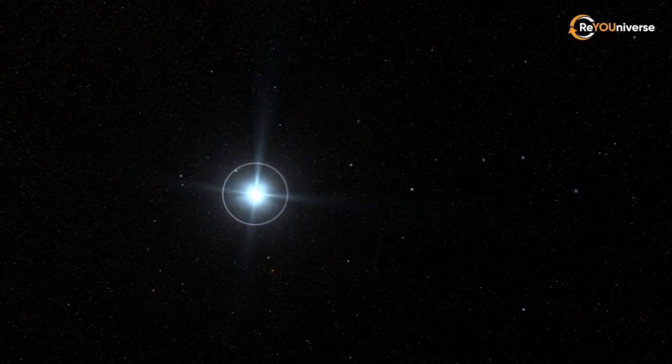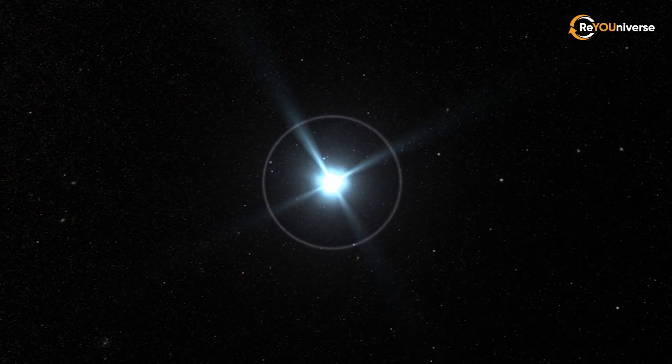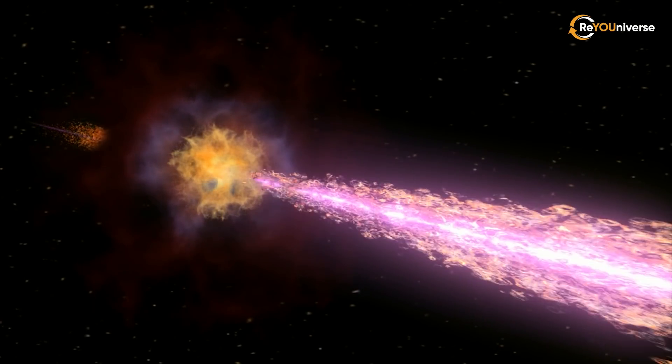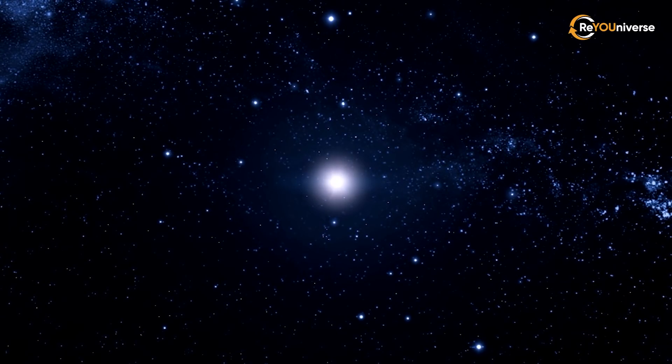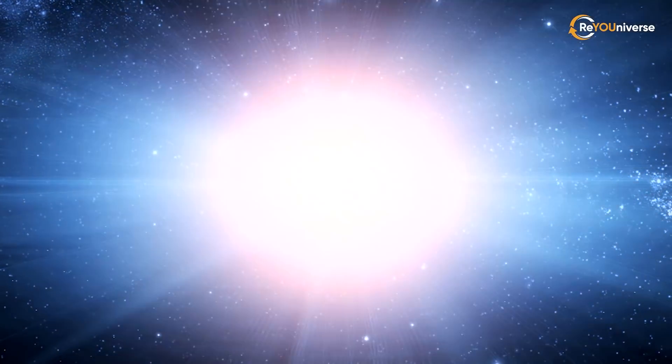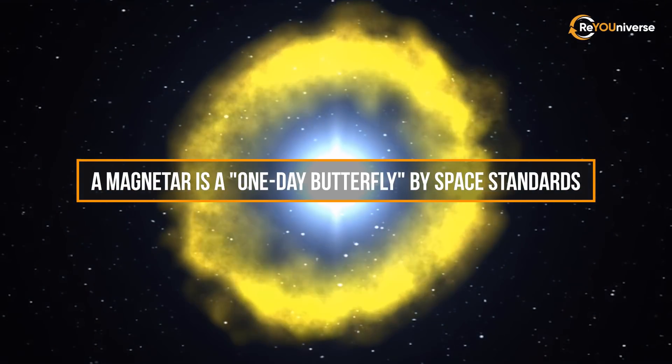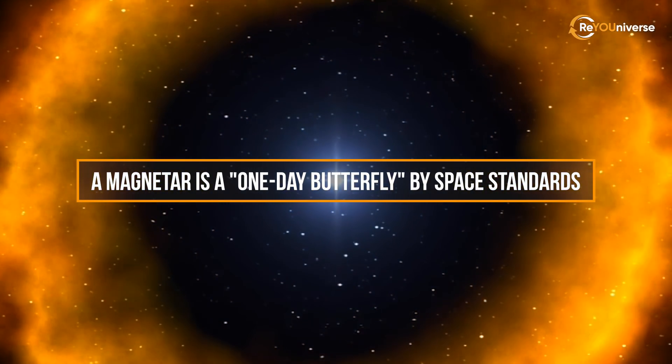While being so bizarre, magnetars are at the same time the shortest living space objects, with a lifespan of 1 million years or less. The active phase of the magnetar's life cycle doesn't exceed 10,000 years, which is followed by the magnetic field decay and a sharp decrease in radiation power. A magnetar is a one-day butterfly by space standards.